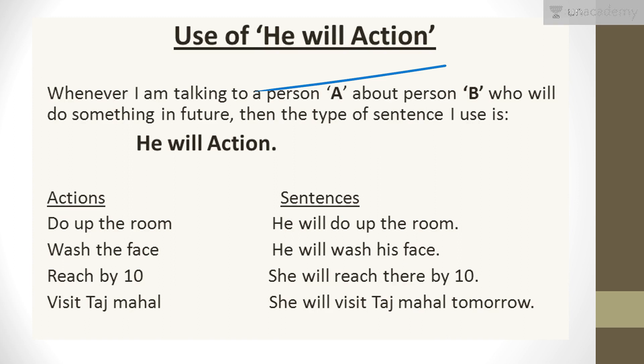The next is use of 'he will action'. Similarly, when I am talking about a person who will do something in future, the type of sentence I use is 'he will action'. Let's say I am talking to you — Raul — and we are talking about some other person, he or she. Then I will say 'he will action' or 'she will action'.